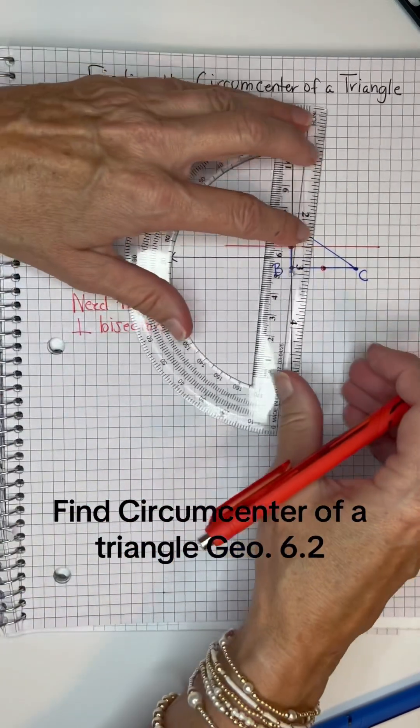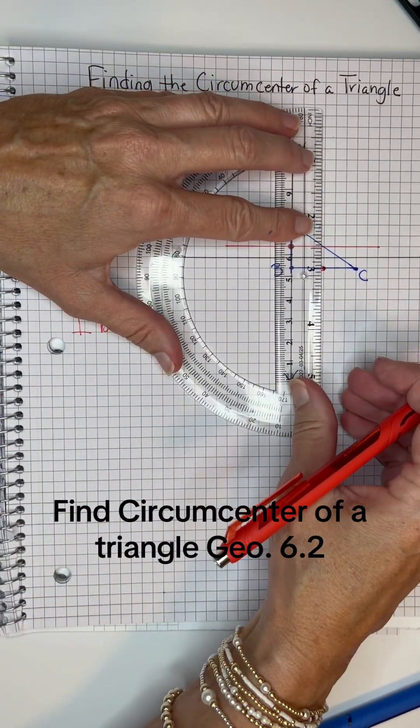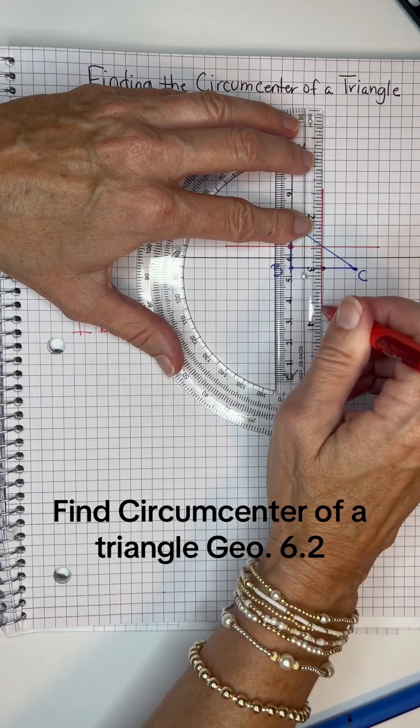Since he's horizontal, the vertical one will be through that mid-segment.